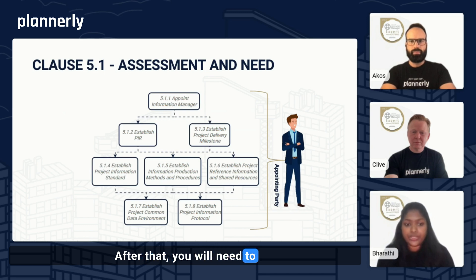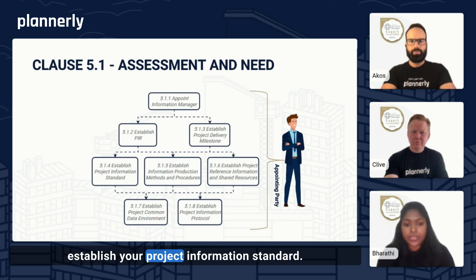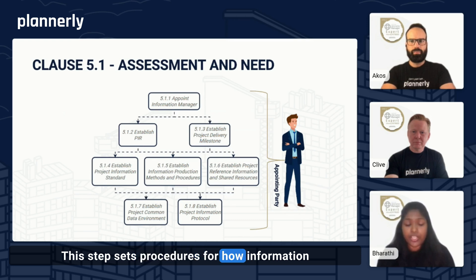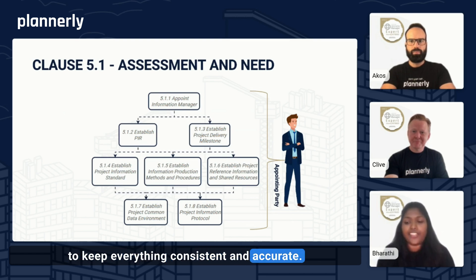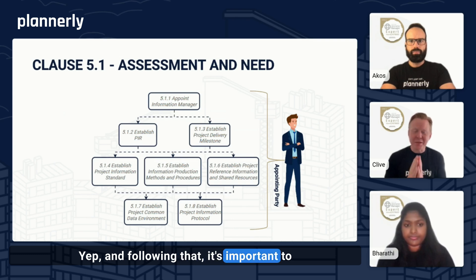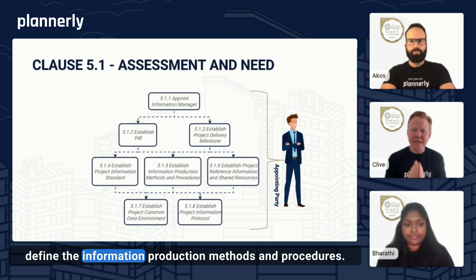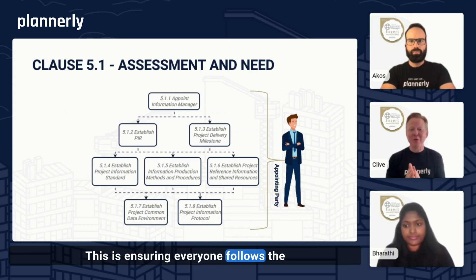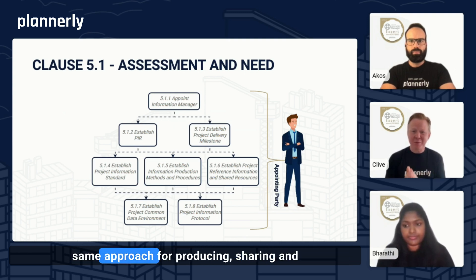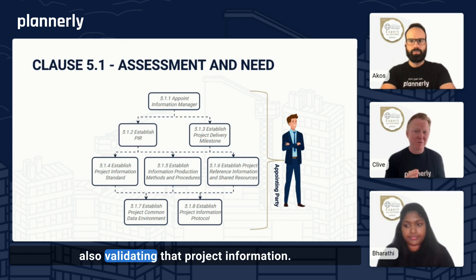After that, you will need to establish a project information standard. This step sets procedures for how information will be produced, named, stored, and shared to keep everything consistent and accurate. Following that, it's important to define the information production methods and procedures, ensuring everyone follows the same approach for producing, sharing, and validating that project information.